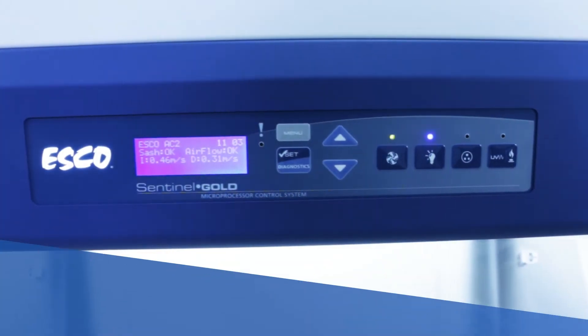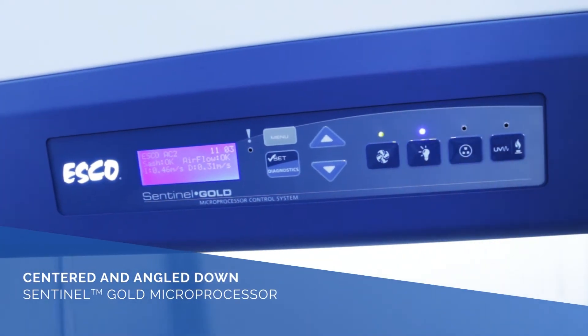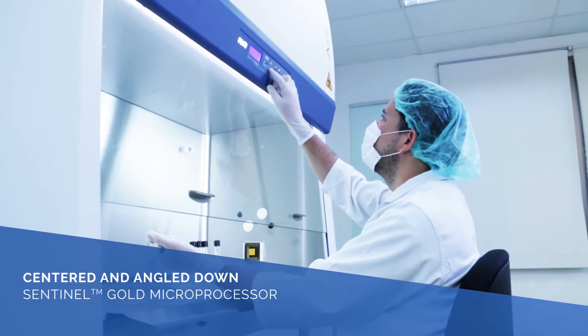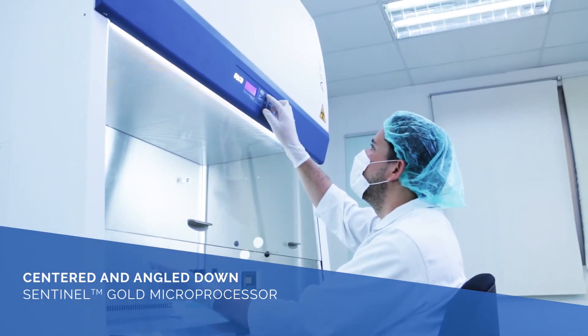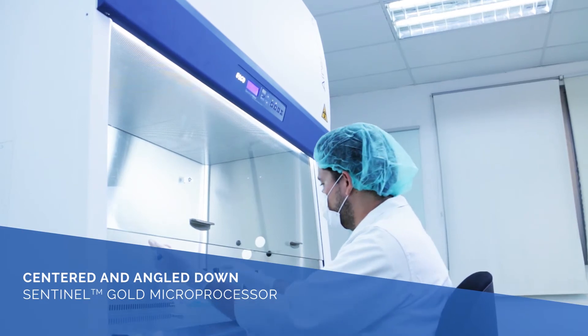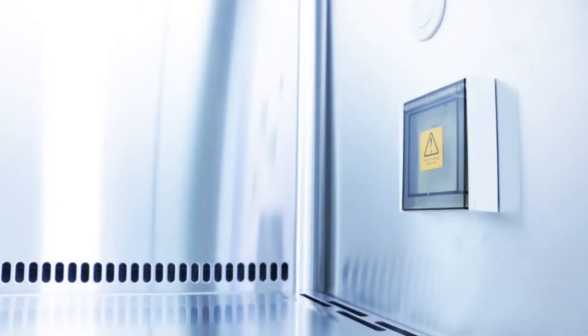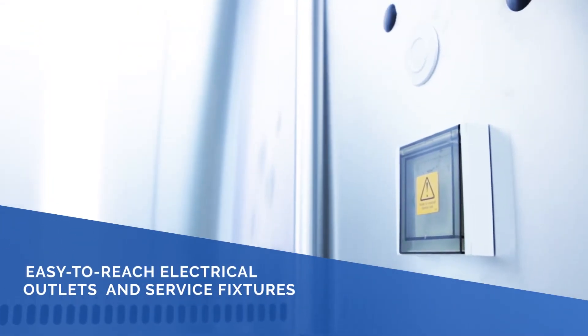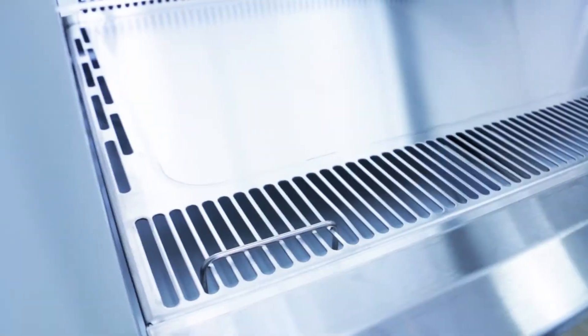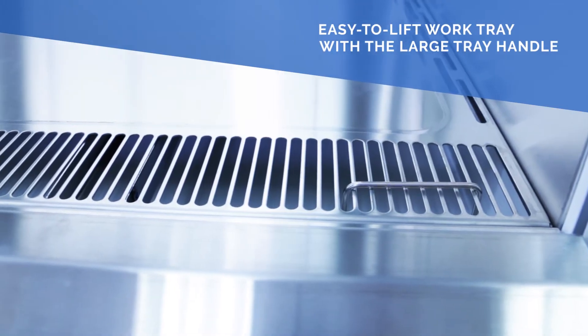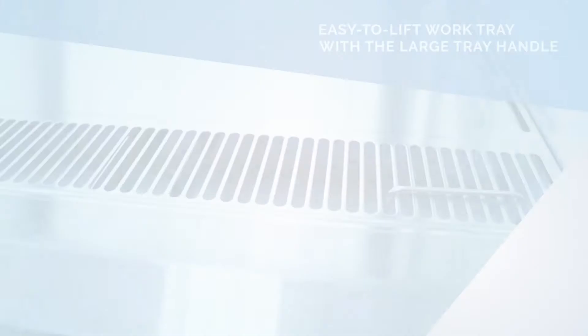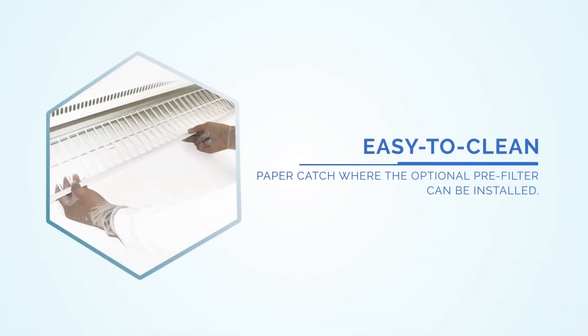Maximize productivity with the ergonomic features that include centrally located Sentinel Gold Microprocessor Controller for easy reach and angled down design for easy viewing, work zone with easy to reach electrical outlets and service fixtures, hassle-free lifting of your work tray using the large tray handle, and removable paper catch where the optional pre-filter can be installed.